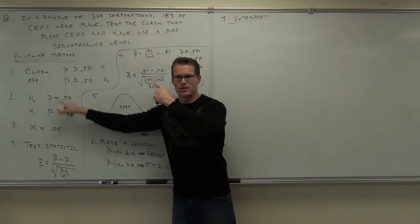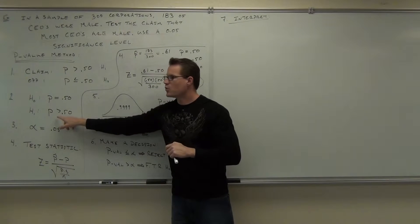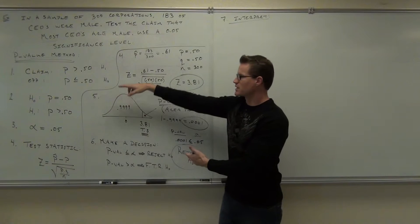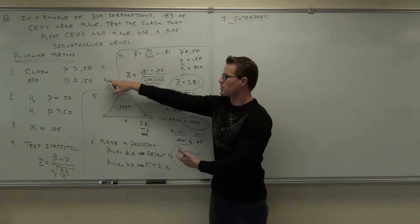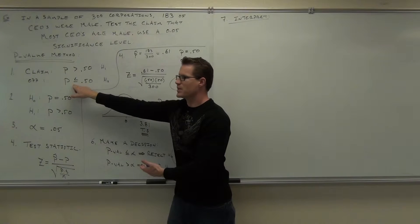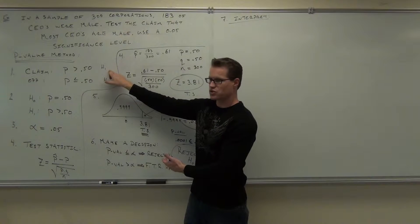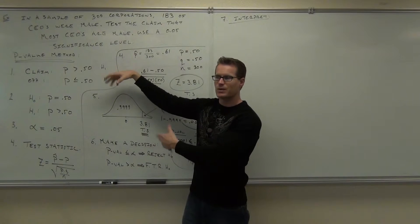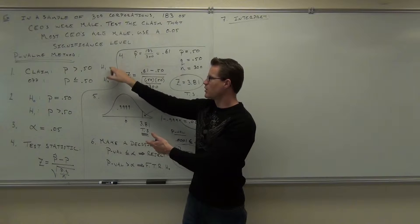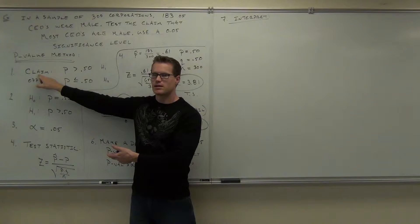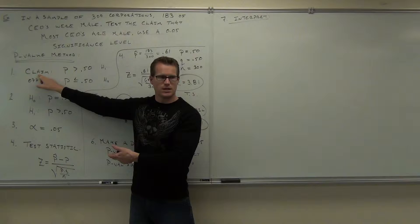Now, this is where this comes in when you head to the final step. Which one was false? What did we reject — H sub 0 or H sub 1? H sub 0. So we rejected this, which means H sub 1 is true. Which one was H sub 1 — the claim or the opposite? The claim. That's why we label it, so when you reject H sub 0, you know to accept H sub 1. Did you prove your claim right? Yes, you certainly did.